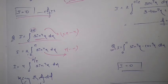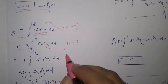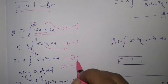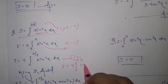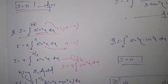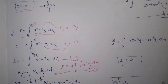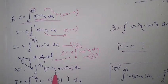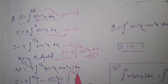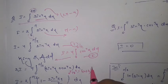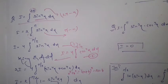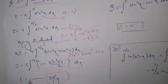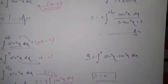Now apply the King Rule on ∫₀^(π/2) sin⁴x dx. Add the two equations — equation 1 and the King Rule result. After adding, apply the identity a² + b² = (a + b)² - 2ab. Solve through and you will get the answer: I = 3π/4.